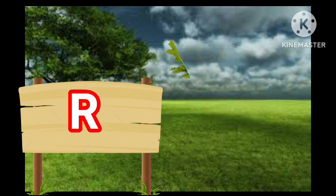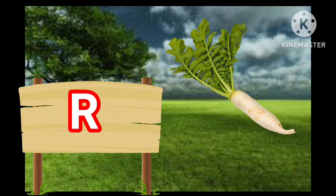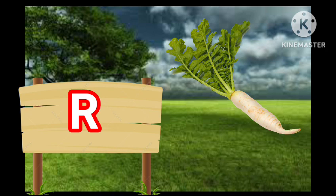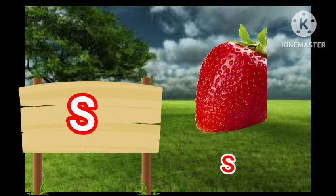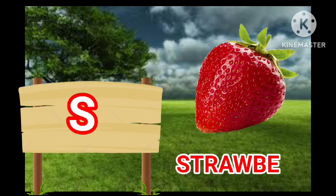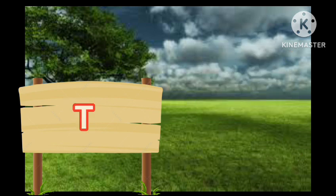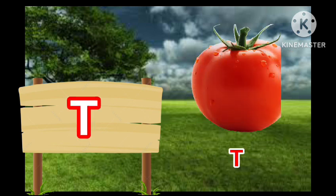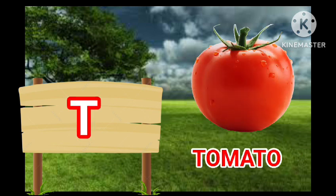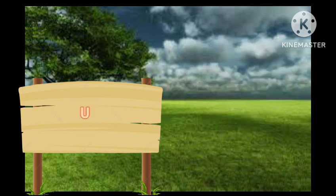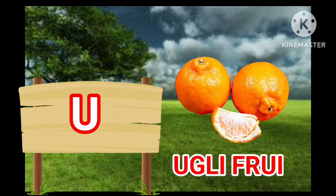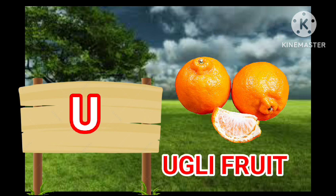R for Radish, S for Strawberry, T for Tomato, U for Ugly Fruit.